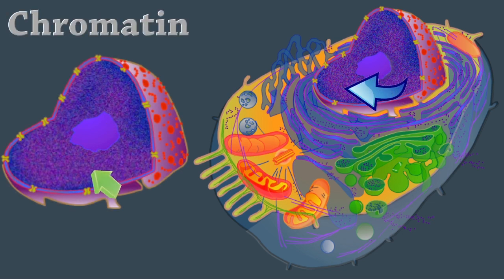Chromatin is a granular, thread-like material composed of DNA and histone proteins. Chromatin packages DNA into a smaller volume to fit into the cell, and it controls gene expression and DNA replication. Histones, part of the chromatin, compacts the DNA for transport.